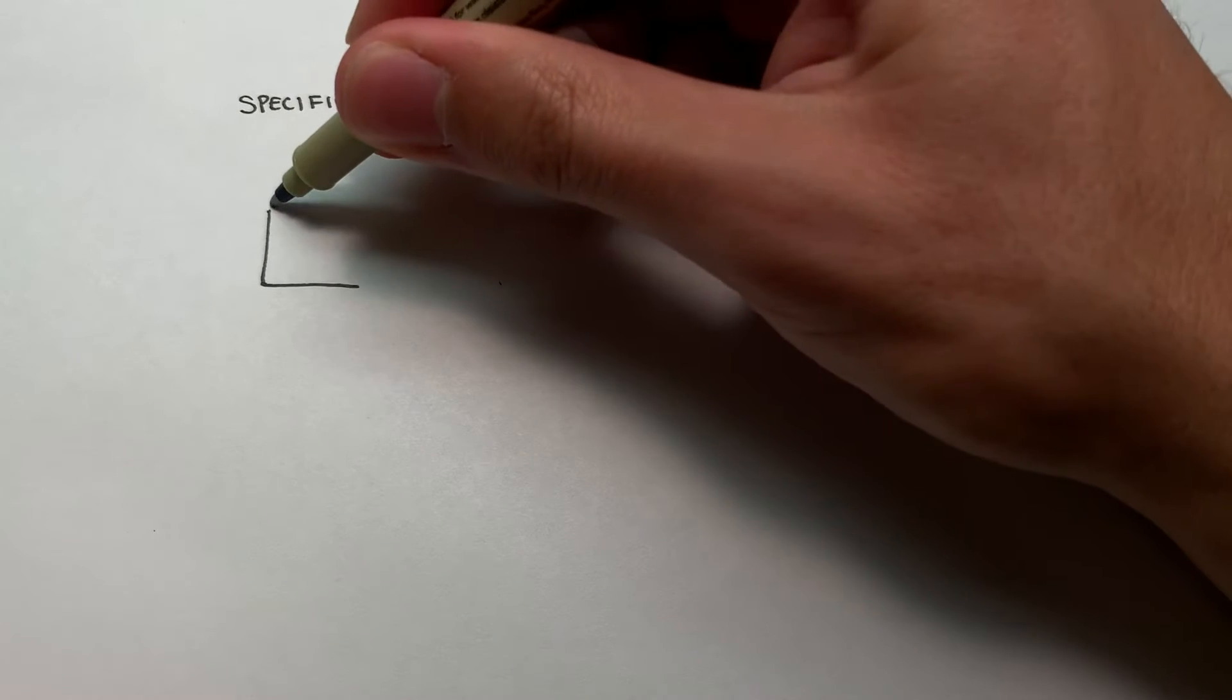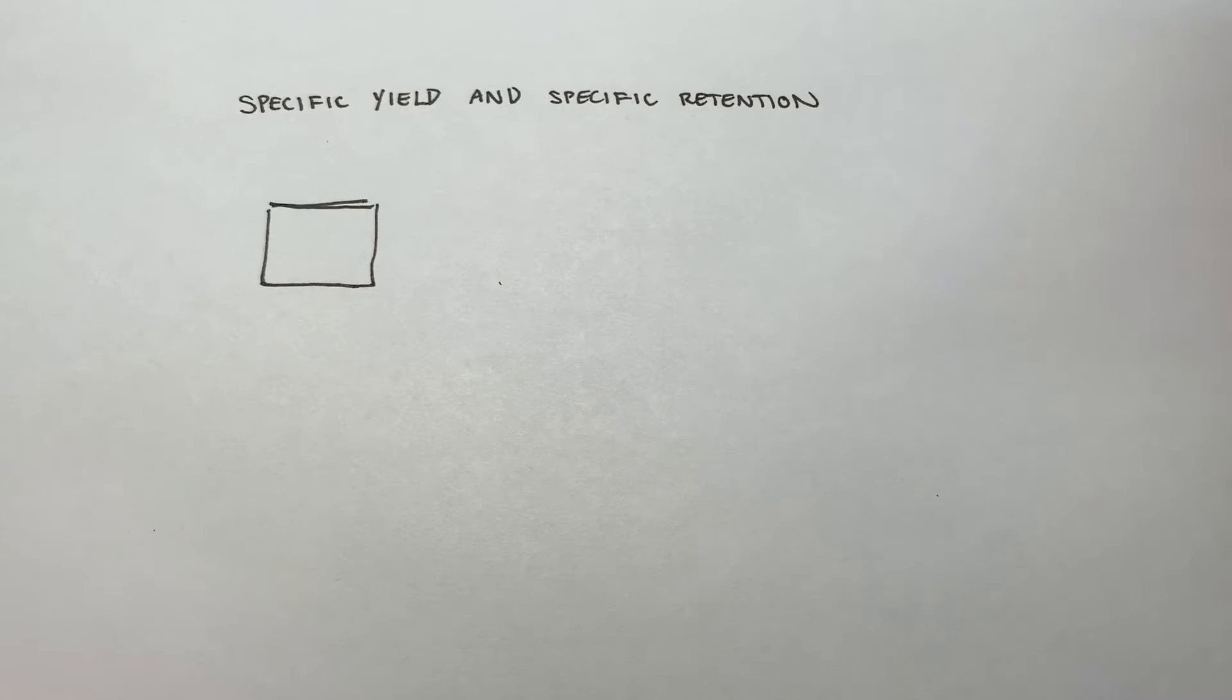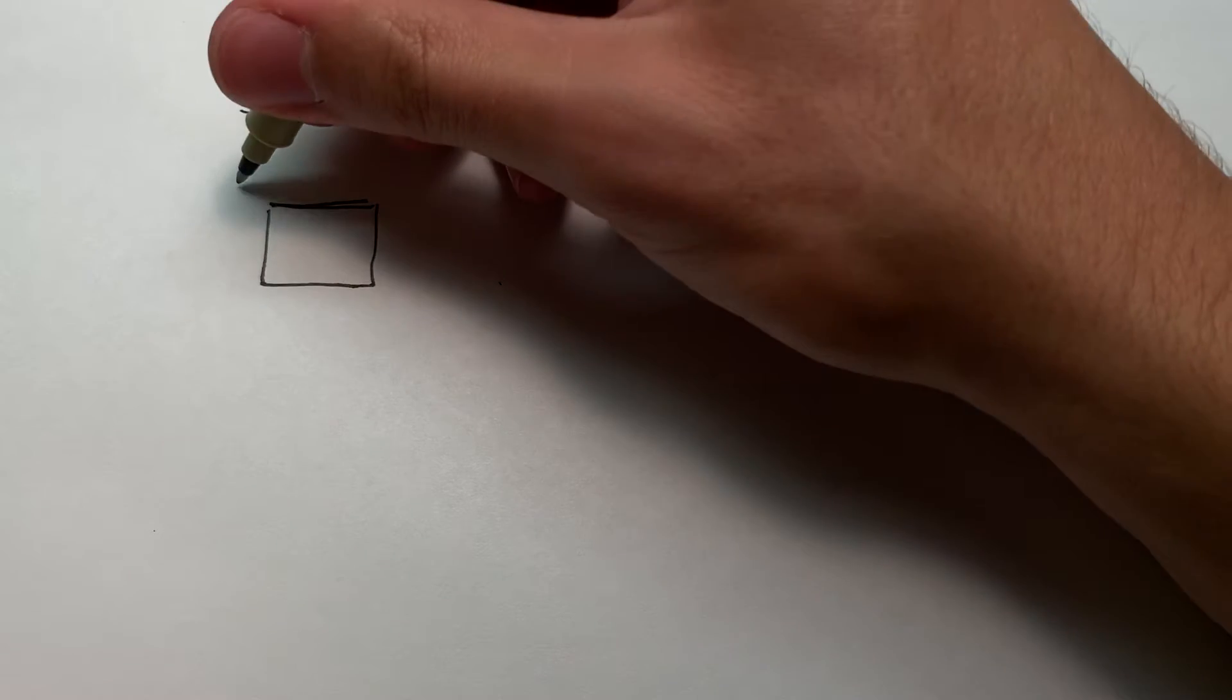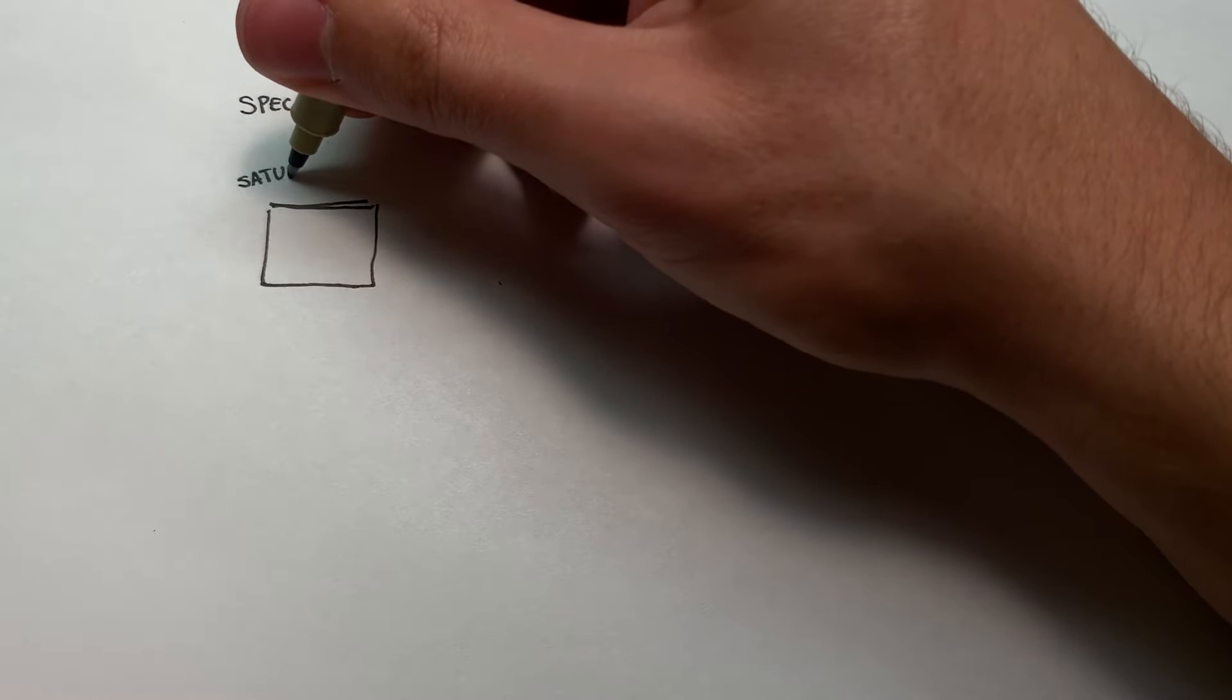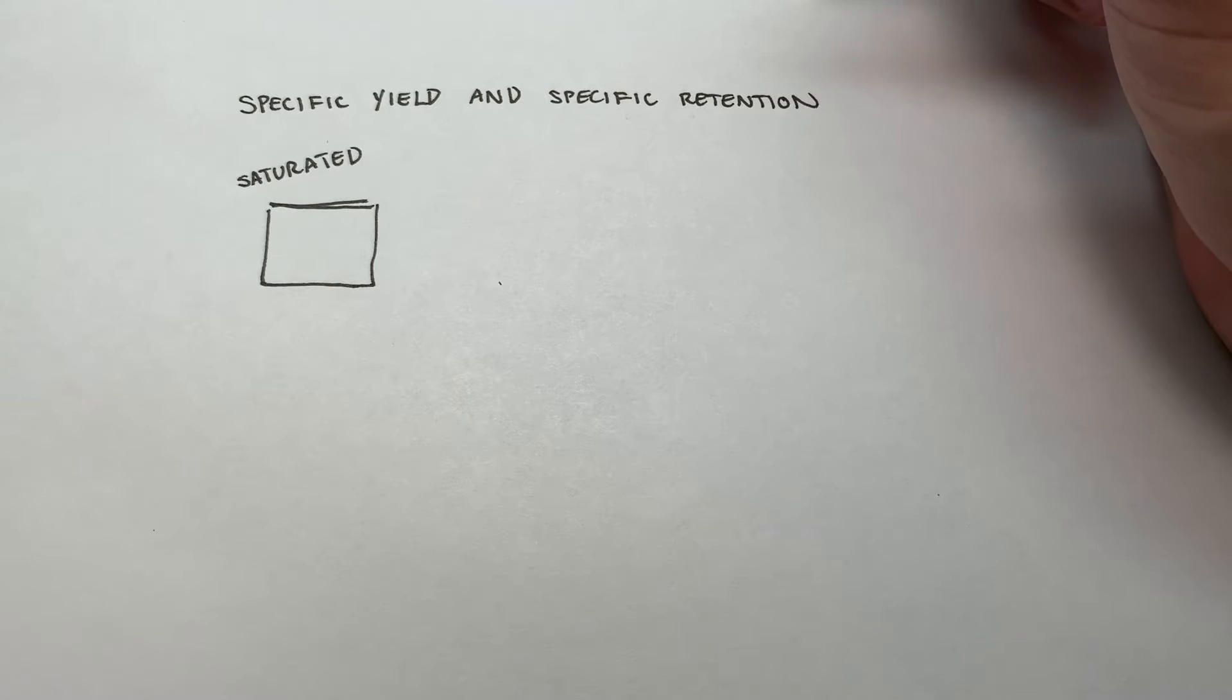Let's say we have a sample. I'll represent it just as this little box here, this little square, and it's fully saturated. I'll touch on this later, but it is important that it is saturated, meaning that all of the pore space in it is filled.